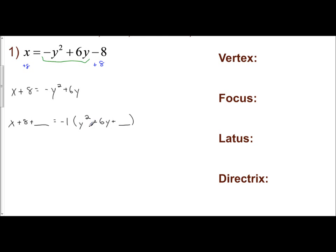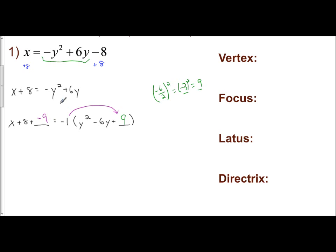Focus inside the parentheses: take half your b value — negative 6 over 2 — and then square it. That gives me negative 3, and negative 3 squared is positive 9. The 9 goes in the placeholder to create a perfect square trinomial. However, when figuring out what to put on the other side to keep the equation balanced, I have to take into consideration what I factored out. Negative 1 times 9 means I'm really subtracting 9, so a minus 9 goes on the left side.